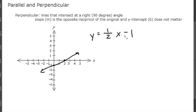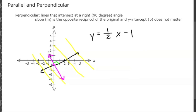Looking at this visually, I'll give you the equation y equals 1/2 x minus 1. A perpendicular line would intersect this at a 90-degree angle — this angle right here is 90 degrees. You could also have a line here, or here, and so on, so there are infinitely many perpendicular lines. Let's look at the purple one we just drew.